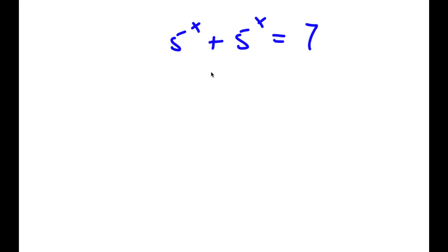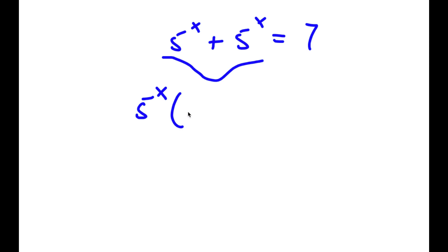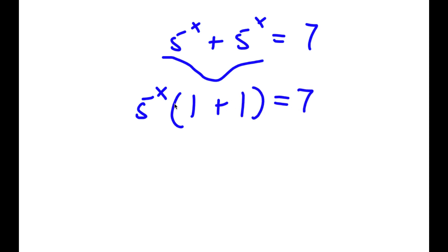Now, 5 to the power of x appears here twice, so I'm simply going to factor this out from my left hand side. So now I have 5 to the power of x times — 5 to the power of x divided by 5 to the power of x, well anything divided by itself is simply 1. So I have 1 plus 1, giving 5 to the power of x times 1 plus 1 is equal to 7.